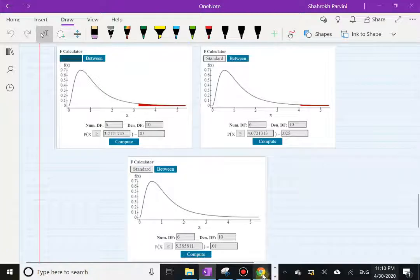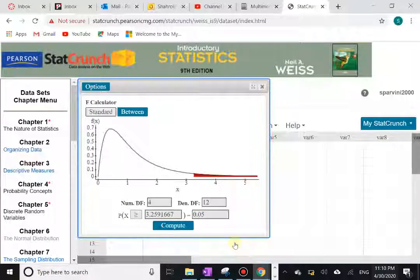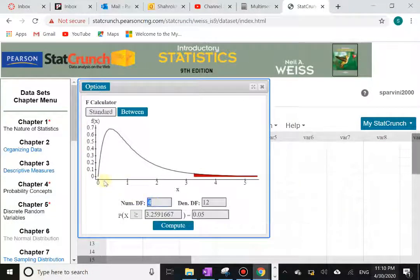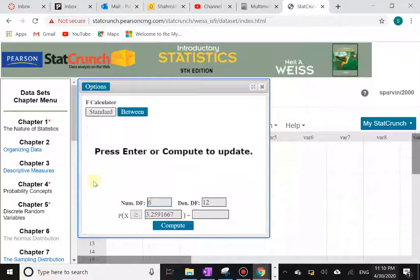So I'm going to go back to StatCrunch, and in StatCrunch remember the degrees of freedom is different now: it's 6 and the denominator is 10. And then we want the area to the right to be 0.05.